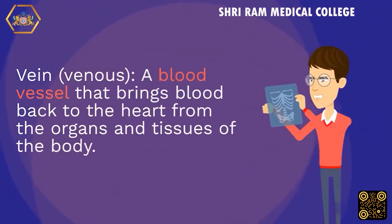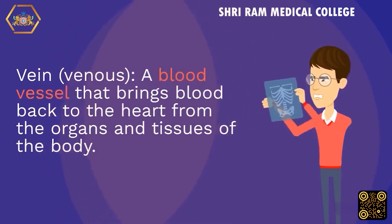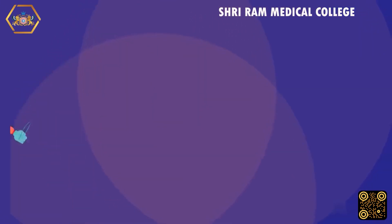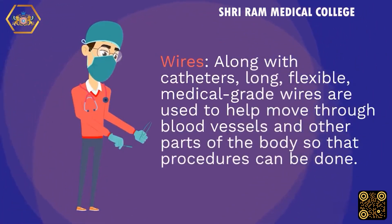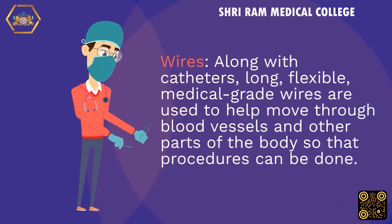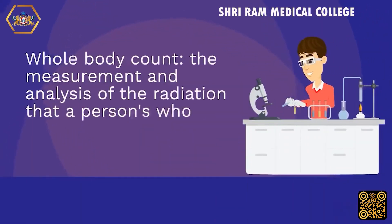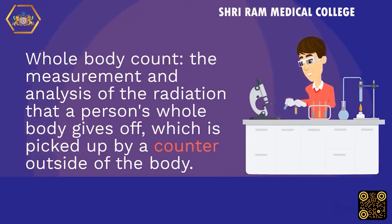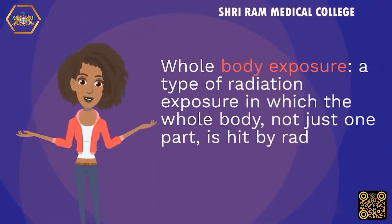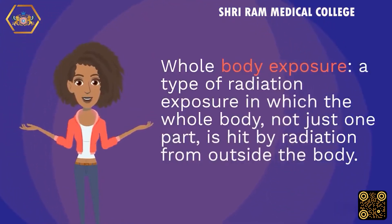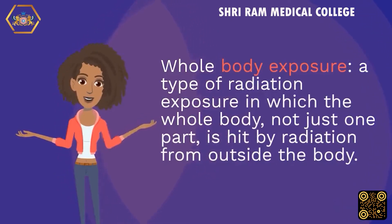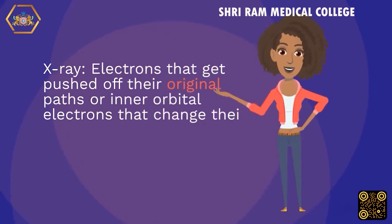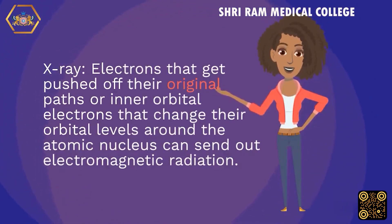Vein/Venous: a blood vessel that brings blood back to the heart from the organs and tissues of the body. Wires: along with catheters, long flexible medical-grade wires are used to help move through blood vessels and other parts of the body so that procedures can be done. Whole body count: the measurement and analysis of the radiation that a person's whole body gives off, picked up by a counter outside the body. Whole body exposure: a type of radiation exposure in which the whole body, not just one part, is hit by radiation from outside the body. X-ray: electrons that get pushed off their original paths, or inner orbital electrons that change their orbital levels around the atomic nucleus, can send out electromagnetic radiation.